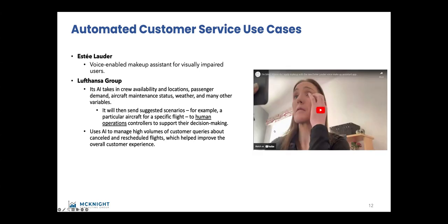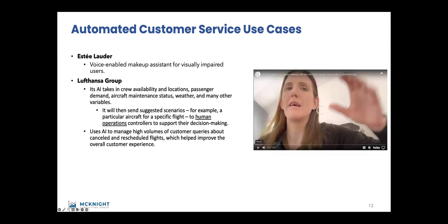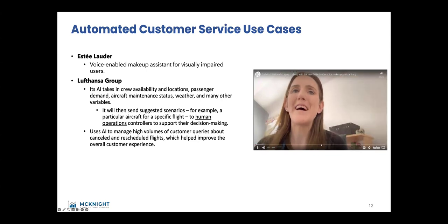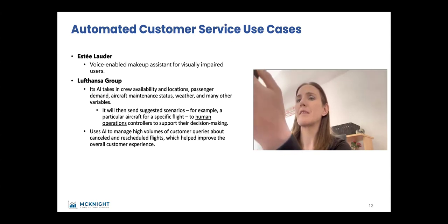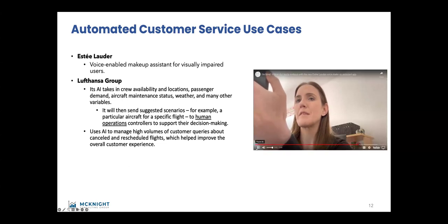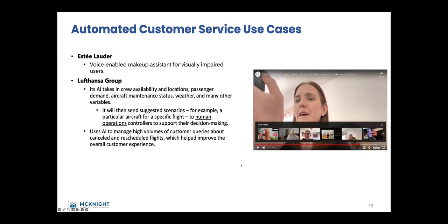This lady is blind and she likes to wear makeup. I played a clip from Estée Lauder. She'd applied the makeup and was looking at her phone — the app was saying the foundation on the left and the right do not match, make sure it's smooth. She can interactively apply makeup even though she is visually impaired. I thought that was a great use of AI.